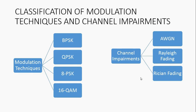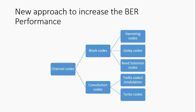The modulation techniques implemented in this project are BPSK, QPSK, 8PSK, and 16QAM. The performance of each of these modulation techniques is compared in presence of channel impairments like AWGN, Rayleigh fading, and Rician fading. In order to maximize the performance of these modulation techniques, channel coding is implemented. The channel coding techniques implemented are Hamming codes, Golay codes, Reed Solomon codes, and Trellis coded modulation. Turbo codes can be a further extension to this project.